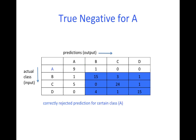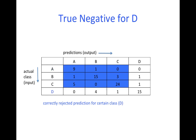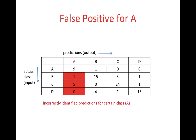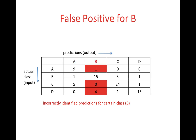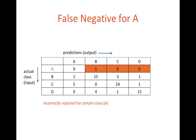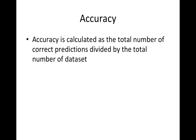True negative is correctly rejected prediction for a certain class. The blue color cells in this example are the true negative for class A, and these blue color cells are the true negative for class D. False positive means incorrectly identified predictions for a certain class — these red cells are false positive for class A, and these red cells are false positive for class B. False negative means incorrectly rejected data for a certain class, and these orange colored cells are false negative for A.